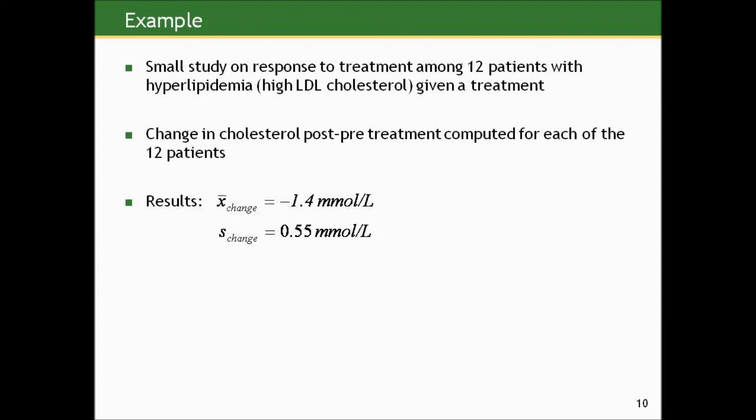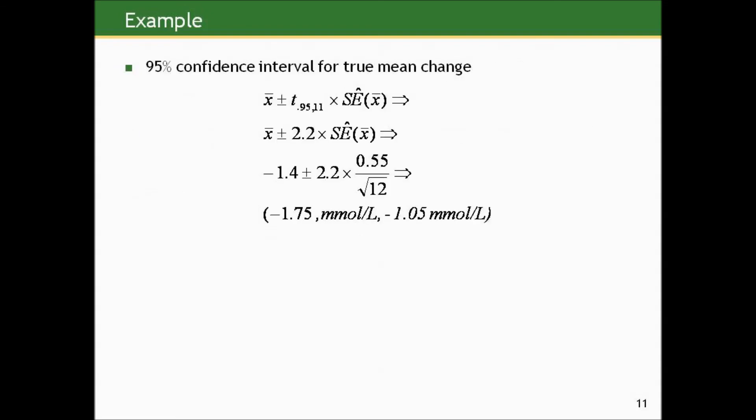Here's an example: a small study on response to treatment among 12 patients with hyperlipidemia — high LDL cholesterol. The 12 patients were given a treatment, and the researchers took a baseline LDL measurement on each person and then a post-treatment measurement, computing the change in LDL cholesterol level for each of the 12 patients. Each person has a change measure: post-treatment minus pre-treatment. What we want to do is create a confidence interval for the mean change in cholesterol. The sample mean change was a decrease on average of 1.4 millimoles per liter, with a standard deviation in those changes of 0.55 millimoles per liter.